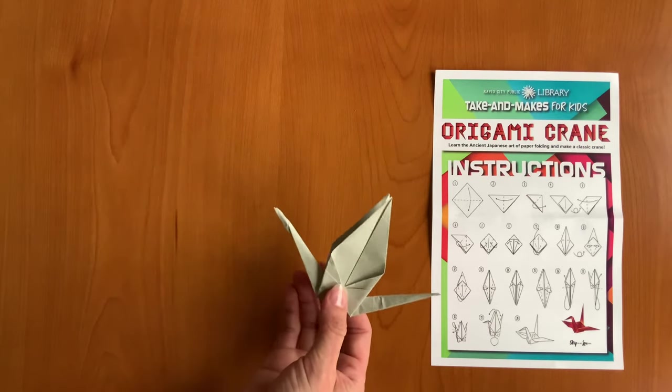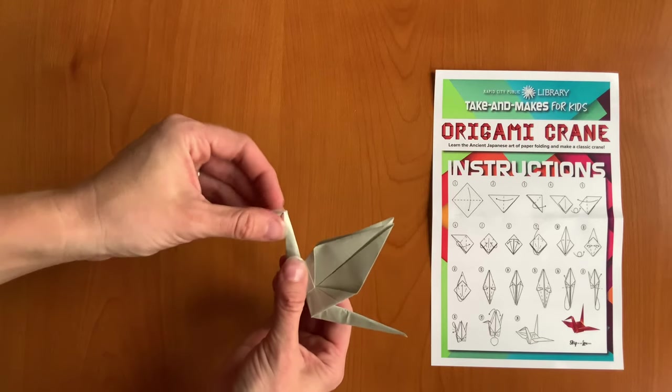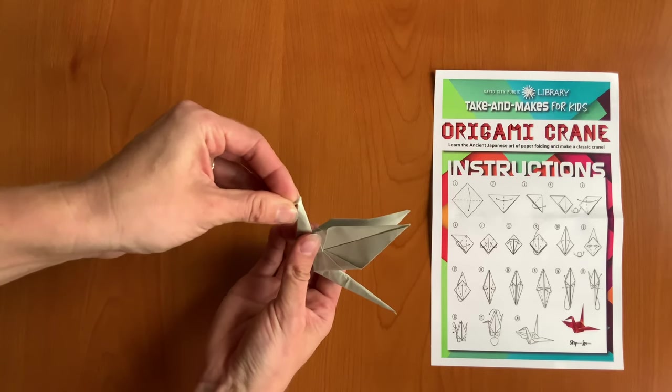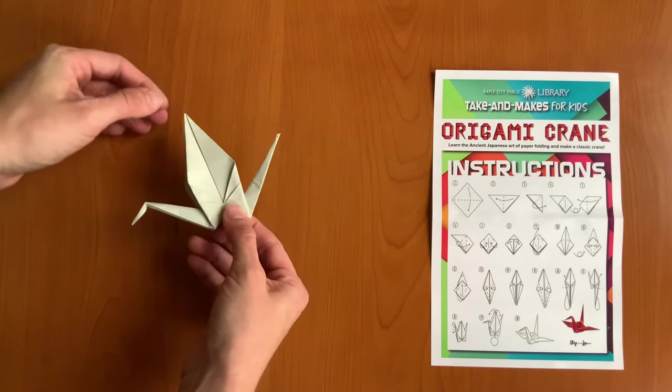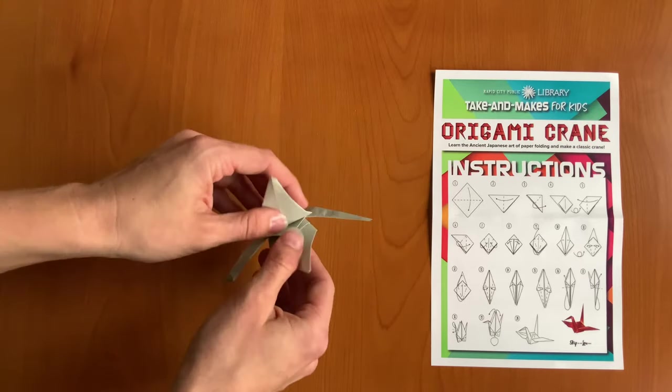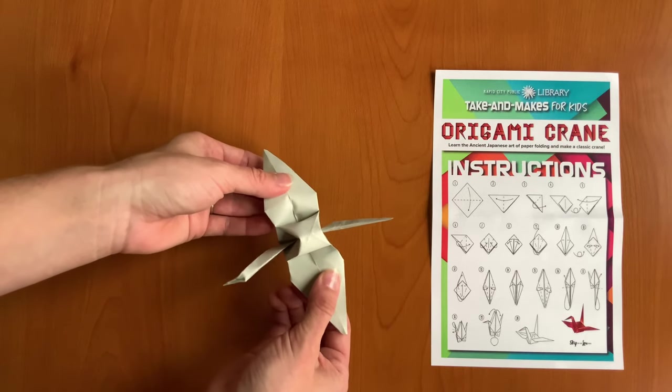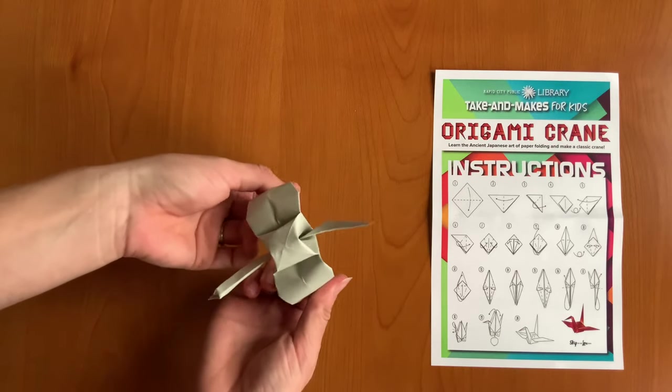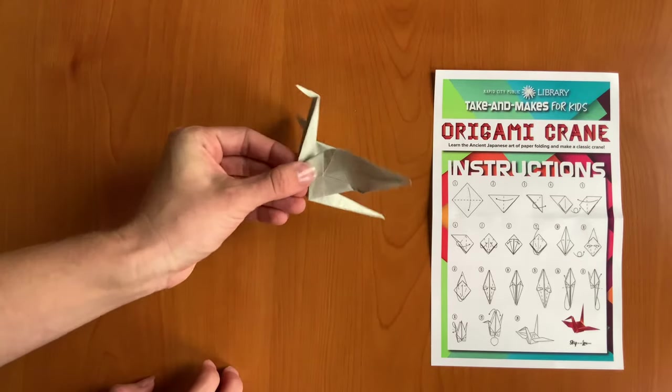Great. We are almost done. We just need to make the head now. So to make the head, you just want to bend down one side and put a little dent in it. There we go. And now you can fold the wings down and gently pull to open up your crane's body. And you have made your very own origami crane.